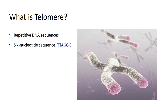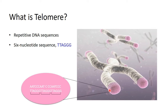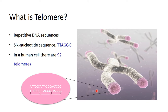If we take a closer look, it's a repetitive TTAGGG sequence with the complementary strand. In a human cell, if we have 46 chromosomes, then at each chromosome there are two telomeres, and then we have 92 telomeres total.